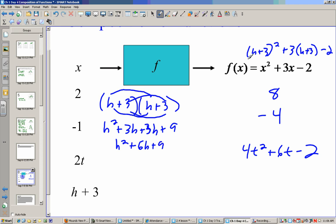So that's just this section. So h squared plus 6h plus 9, and then this would be 3h plus 9 if I distribute, and then minus 2. So now I add up all my h squareds which is just h squared, I add up all my h's which is 6h plus 3h so I have 9h, and then 9 plus 9 minus 2 would be 16.